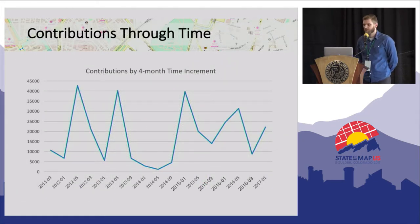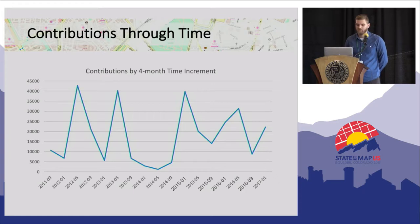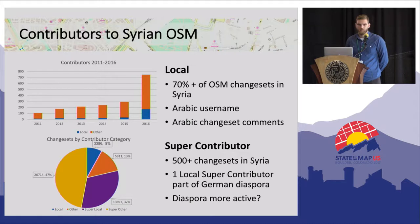The irregular way in which features were added over time suggests that significant events may have motivated users to contribute, but also that a few super contributors may be responsible for a lot of the content. We focused on two dimensions of contributors: those who are likely local versus those who likely aren't, and casual mappers versus super contributors. We estimated a contributor was likely local when at least 70% of their change sets were over Syria and they either had an Arabic username or made a change set comment in Arabic.